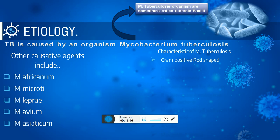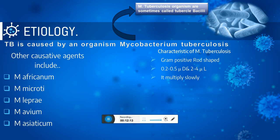The first characteristic of Mycobacterium tuberculosis is that it is a gram-positive rod-shaped bacteria. The length is approximately 2 to 4 microns and the diameter is approximately 0.2 to 0.5 microns. It multiplies very slowly — its proliferation rate takes about 18 to 24 hours for one division. It can also remain dormant for decades.